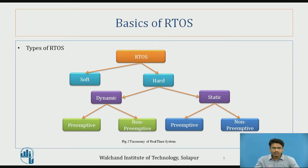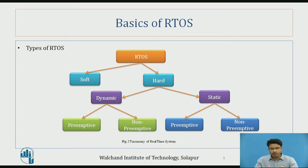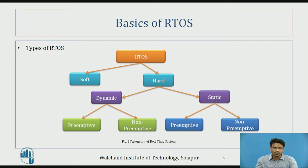Under hard RTOS, we have static and dynamic. Static means that before execution of the program — at the time of compilation — we need to check the schedule. Dynamic means that while executing, if something goes wrong, the system will dynamically and automatically change its behavior to achieve the task. So dynamic scheduling is achieved at run time, while static scheduling is achieved before run time, i.e., at compilation time.